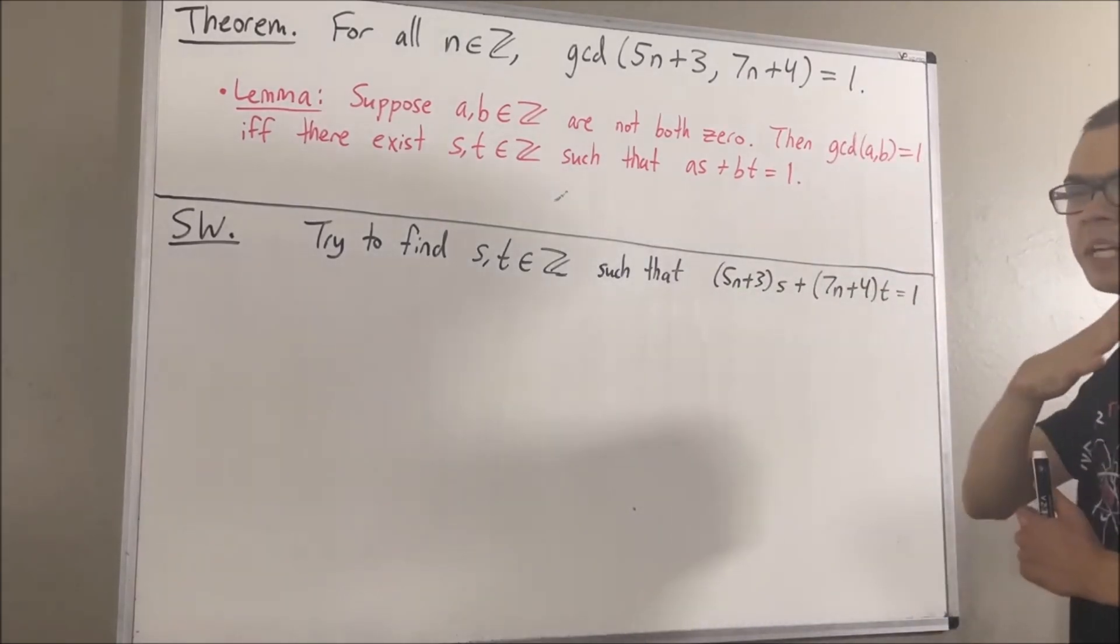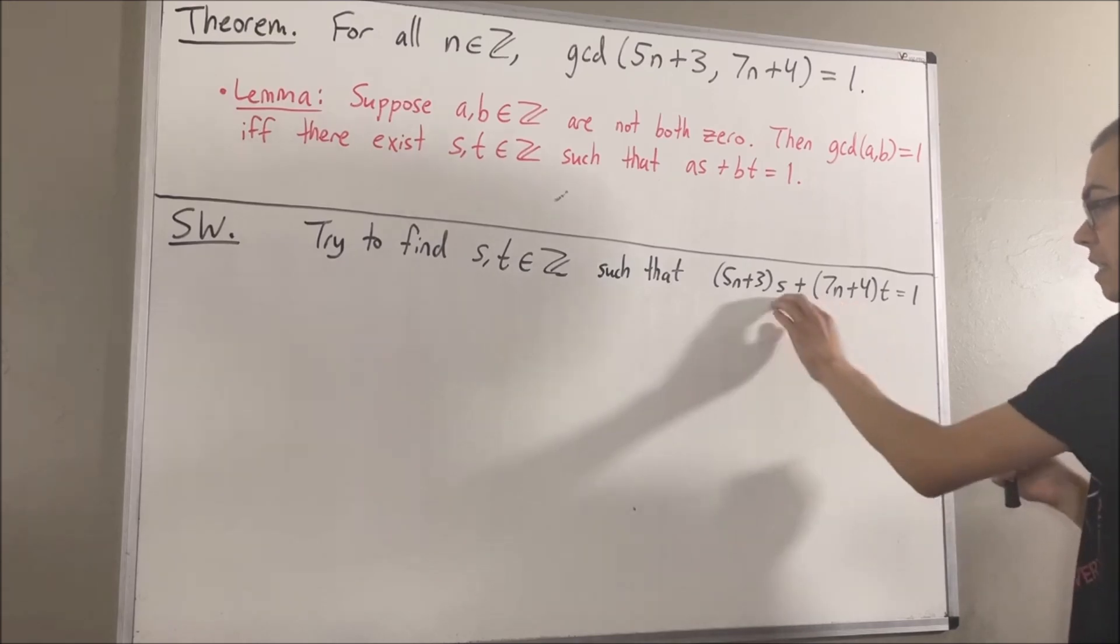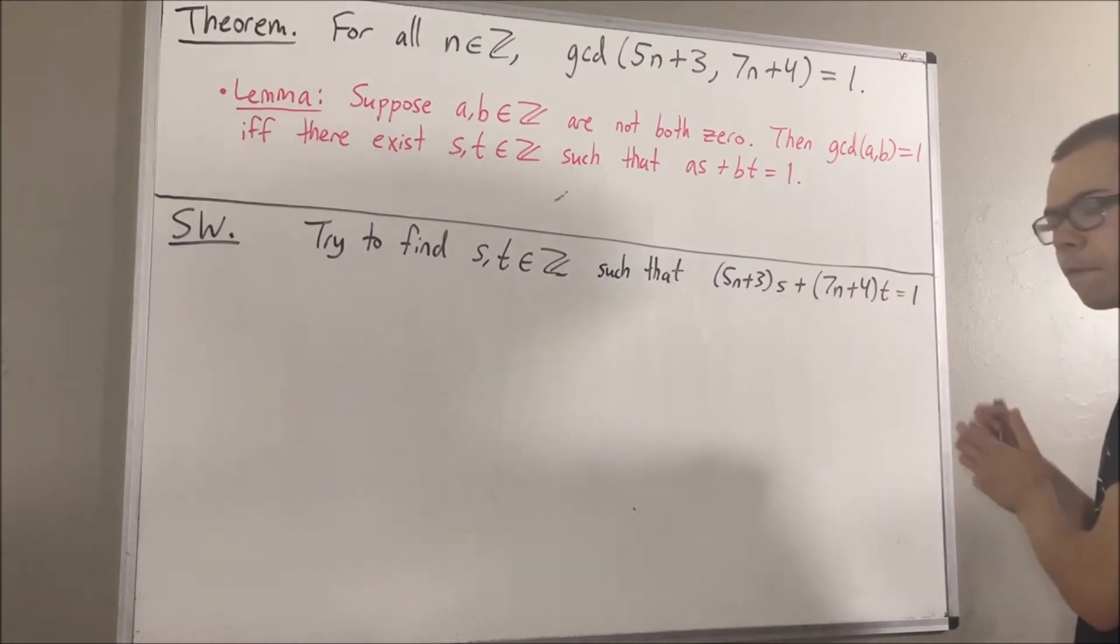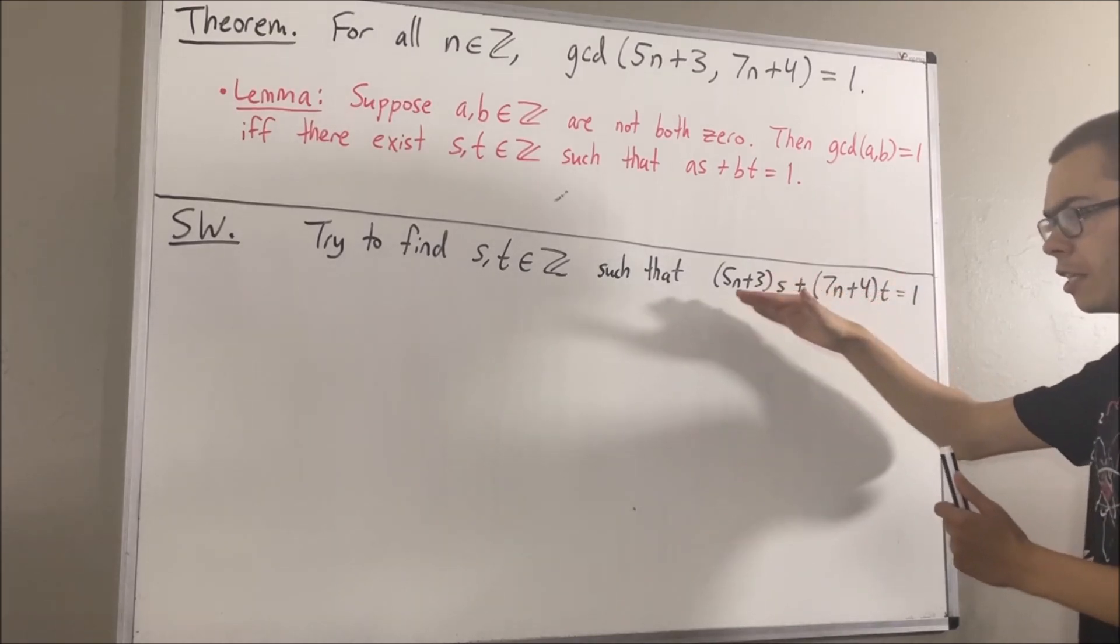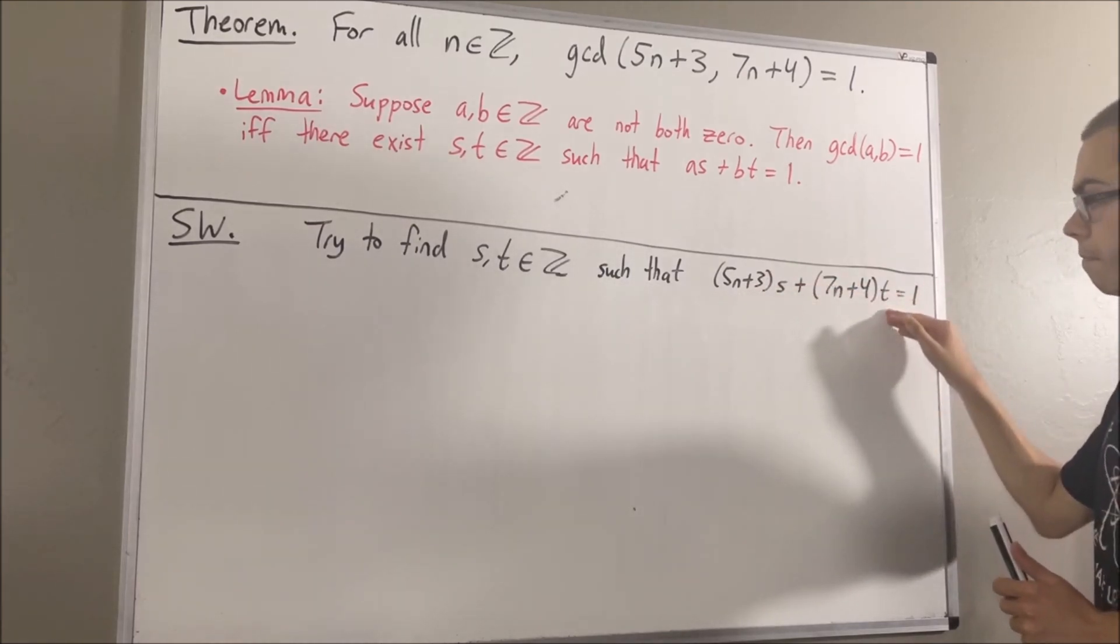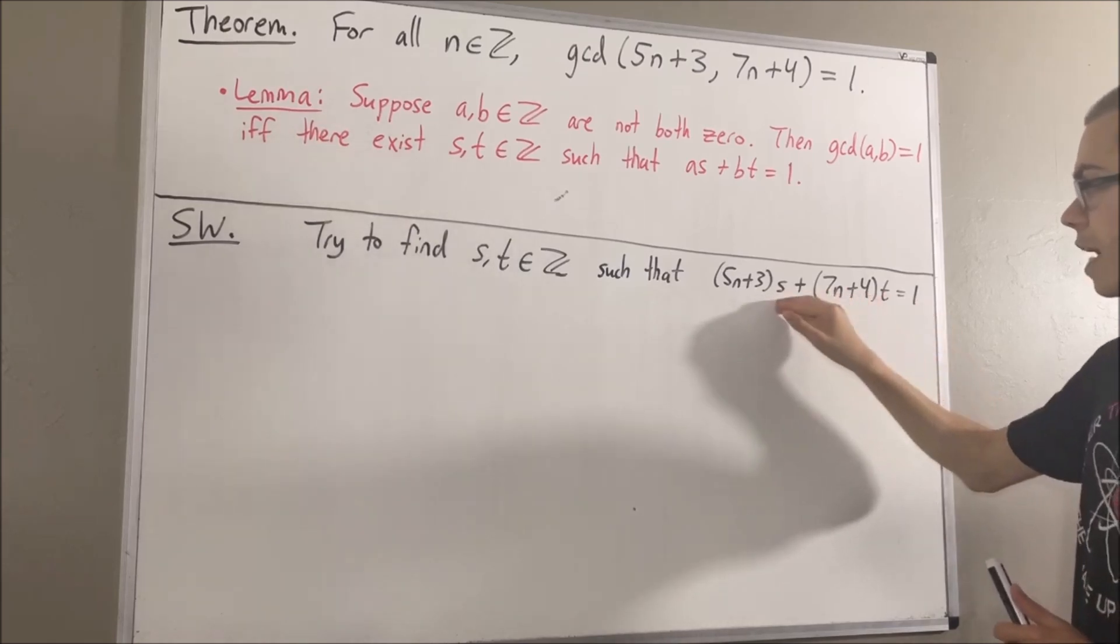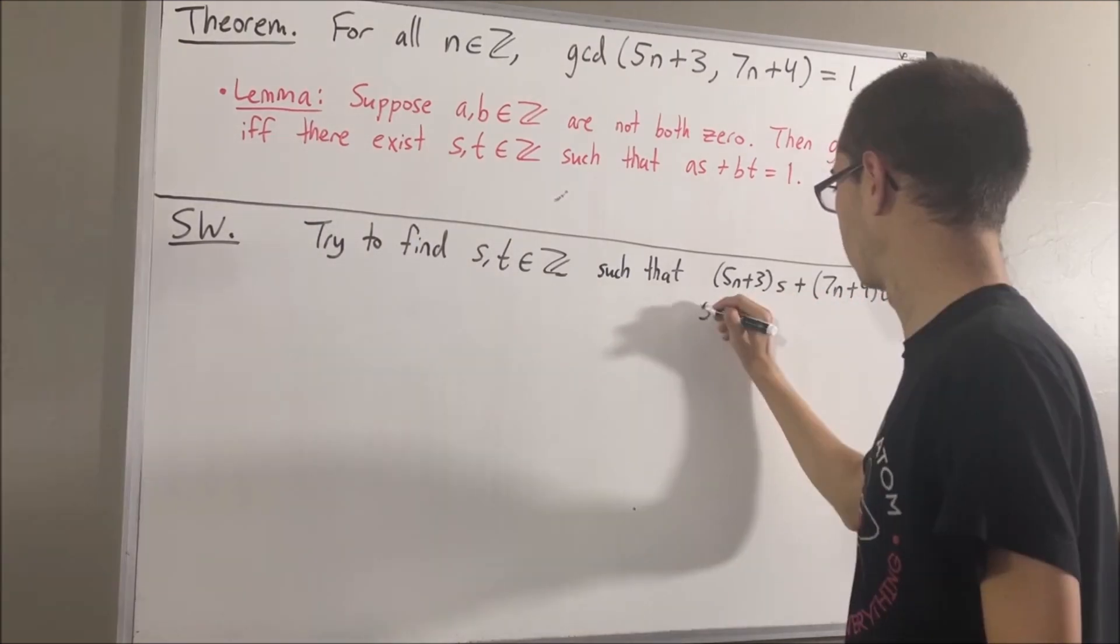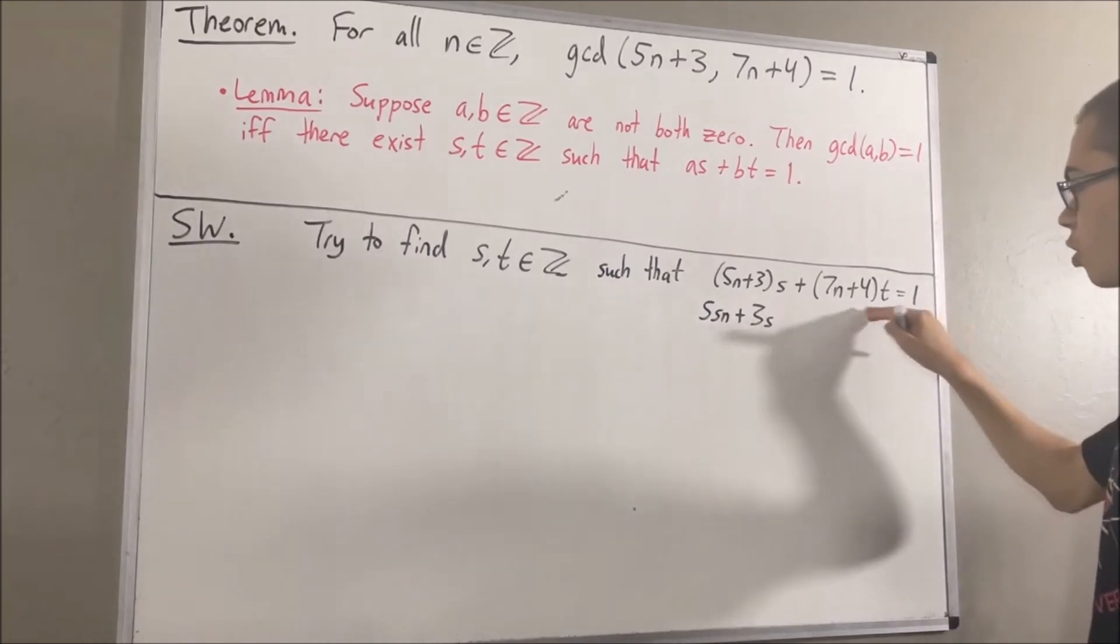Now, some of you guys might immediately see what we should choose s and t to be, but if you don't immediately see it, here's something that we can do in order to figure out what to choose s and t to be. Well, let's distribute s across this parentheses, and let's distribute t across this parentheses.